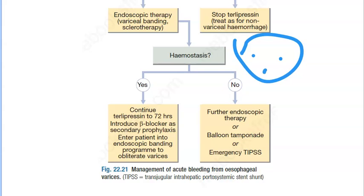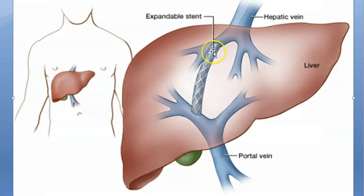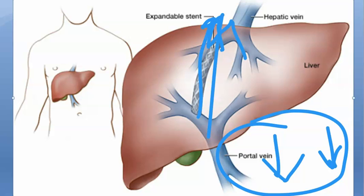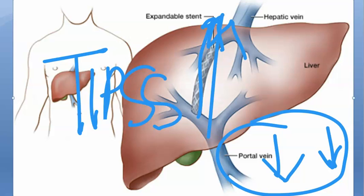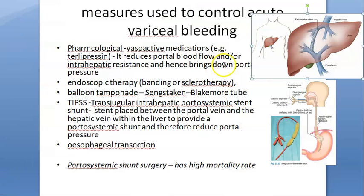If hemostasis is still not achieved after variceal banding and sclerotherapy, you proceed further. You can try balloon tamponade or an emergency TIPS — Transjugular Intrahepatic Portosystemic Shunt. In TIPS, access is via the jugular vein, and a stent is placed between the portal vein and hepatic vein so that portal blood drains into the hepatic vein, reducing portal pressure. This is an emergency procedure done as a last resort after other measures fail.